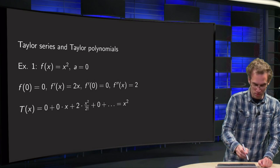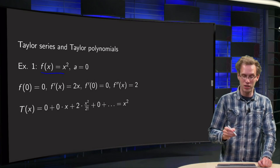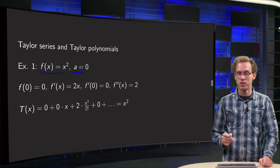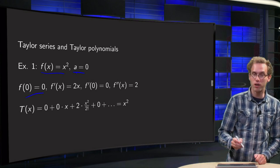So let's start with the first example, f(x) = x², and let's compute its Taylor series about a = 0. So what do we need? f(0), plug in 0, you get 0.